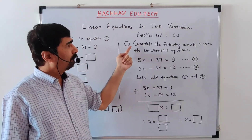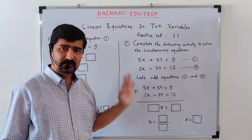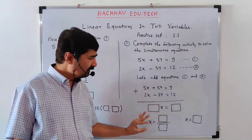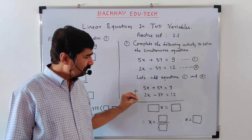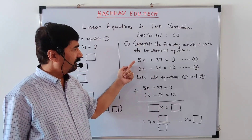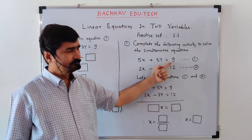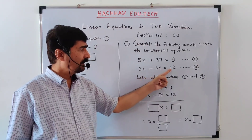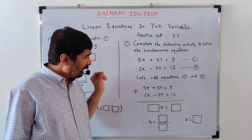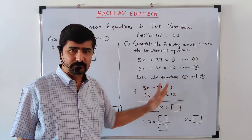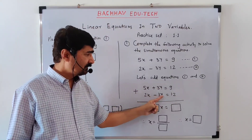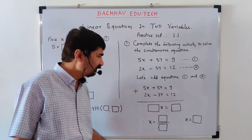Exercise 1.1, Question 1: Complete the following activity to solve the simultaneous equations. 'Complete the following activity' means they will provide blank places and we have to fill them with answers.